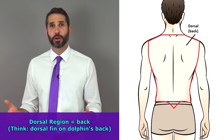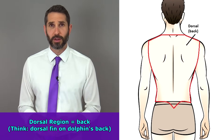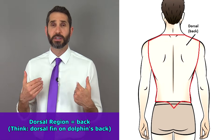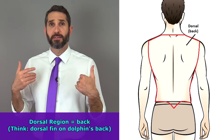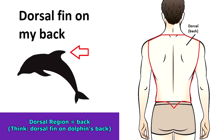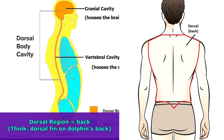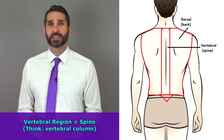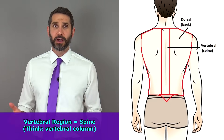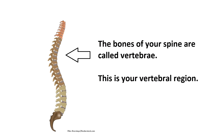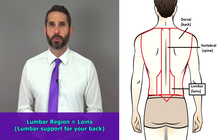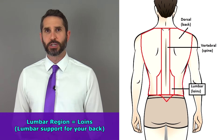On the posterior side of the trunk, there are additional terms to know. The dorsal region is the area of the back — think of a dolphin, which has a dorsal fin on its back, and you also have a dorsal cavity towards your back. The vertebral region runs along your spine, where those bones are called vertebrae. The lumbar region is your lower back, better known as your loins — you've heard those chair commercials say 'lumbar support,' which simply means it supports your lower back.